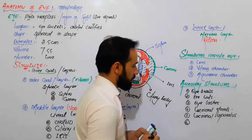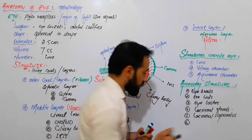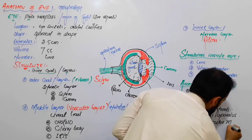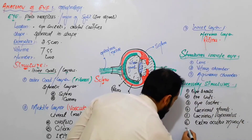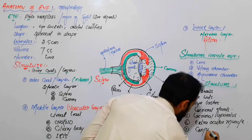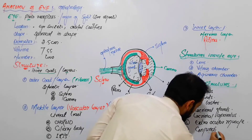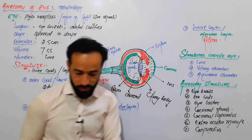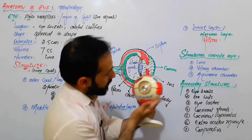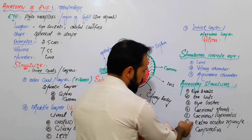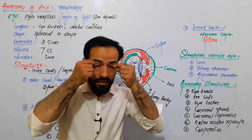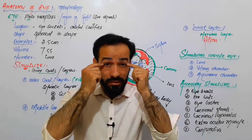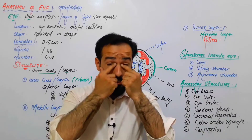Number six, we also have the extraocular muscles — I will show you now the extraocular muscles. Number seven, we have the conjunctiva. Here you can see these muscles which are called the extraocular muscles. Inside the upper eyelids, on the edges, we have the lacrimal glands, and from these lacrimal glands the tears come and are emptied into the lacrimal apparatus.